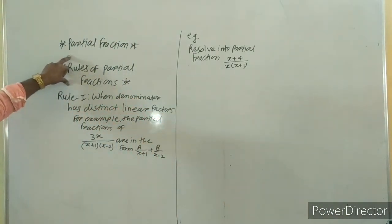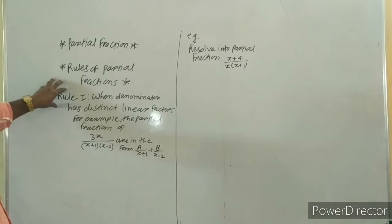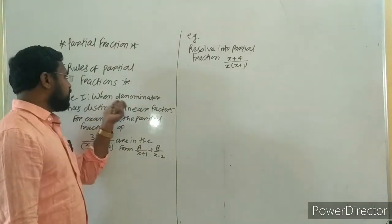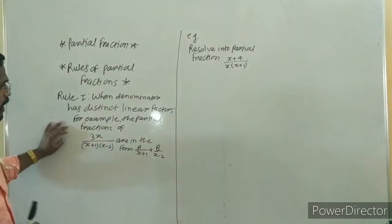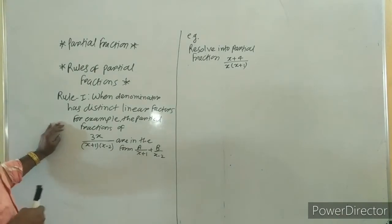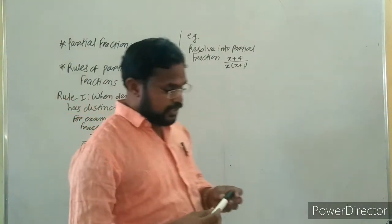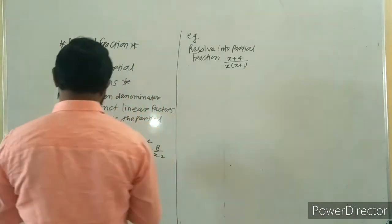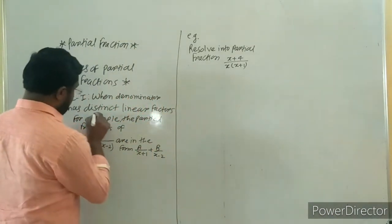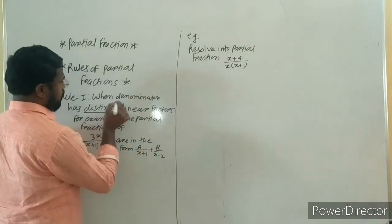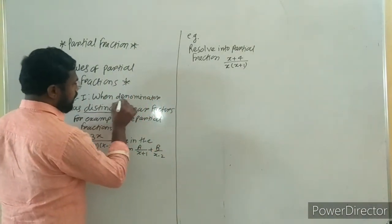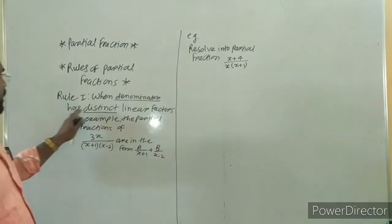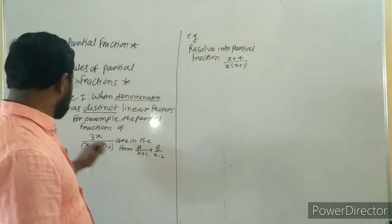There are two rules. Rule number one: when the denominator has distinct linear factors. Distinct linear factors means every linear factor is different from each other. When the denominator has distinct linear factors.